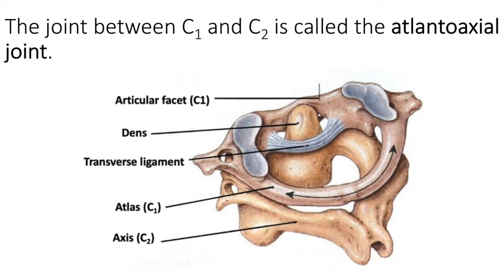Our first select joint is the atlanto-axial joint, the joint between C1 which is called the atlas and C2 which is called the axis. Recall from our previous discussion on movements of synovial joints that this joint is a pivot joint — the movement is rotation. It's this joint that enables you to shake your head no to the right and to the left. The important components are the dens of C2 and the articular facet of C1. The dens remains stationary as the pivot point, and the articular facet of C1 rotates around the dens.